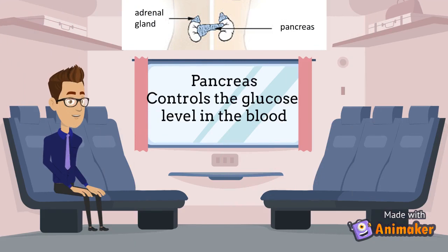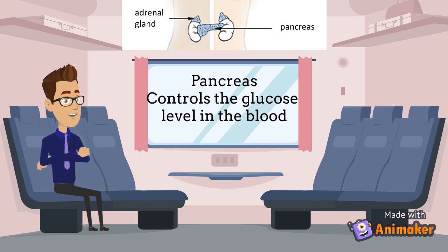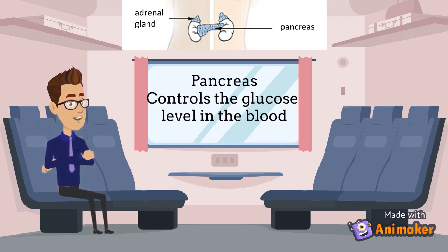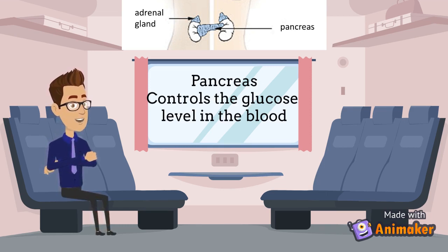The third one is the pancreas. The pancreas secretes insulin and glucagon to regulate the level of blood sugar. Insulin lowers blood sugar level by changing glucose into glycogen in the liver, while glucagon raises blood sugar level by changing glycogen into glucose in the liver. The pancreas is situated below our stomach.